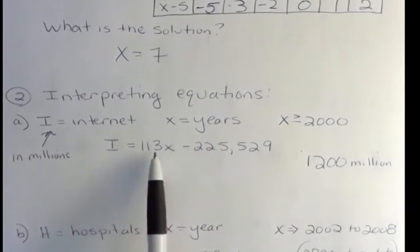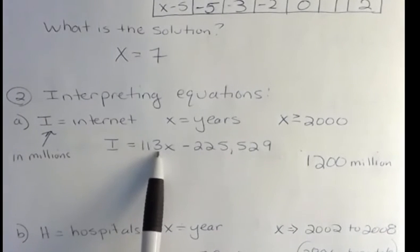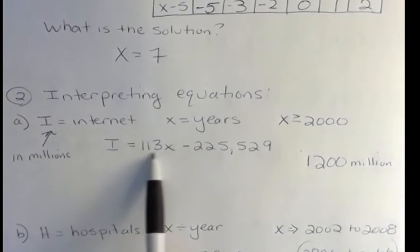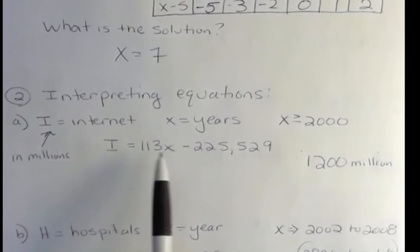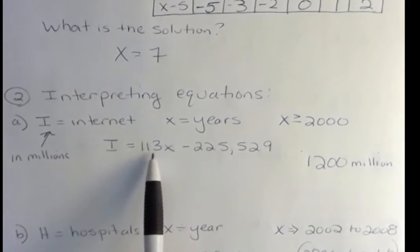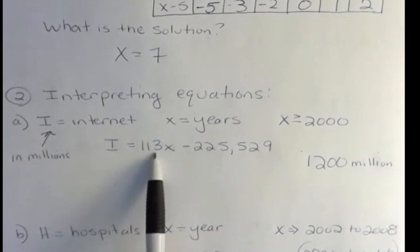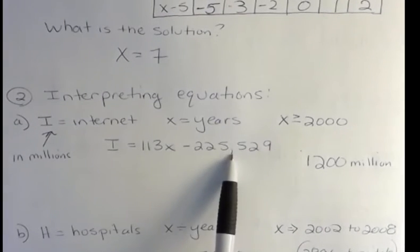Well, I want you to notice something here. Do you see how this is positive 113? This is the slope. And the slope of a line always shows us the change that's going on. And since this is positive, that means there's a positive change. In other words, the number of internet users is going up every year from some initial starting point, which is over here.